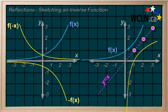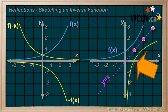For example, if this function was called f in terms of x, then this relation, that is, the f in terms of x reflected around the y equals x line, is called the inverse of f in terms of x.